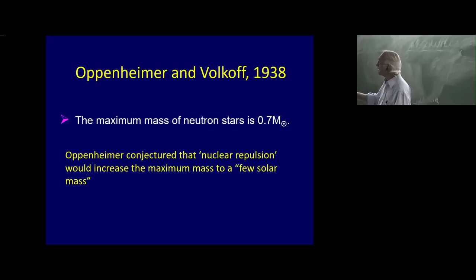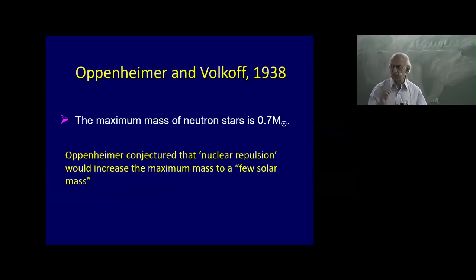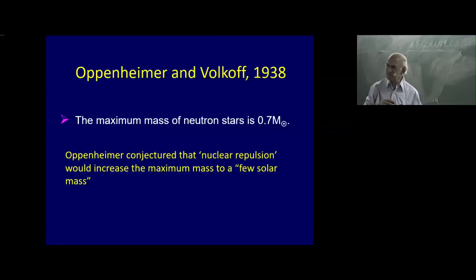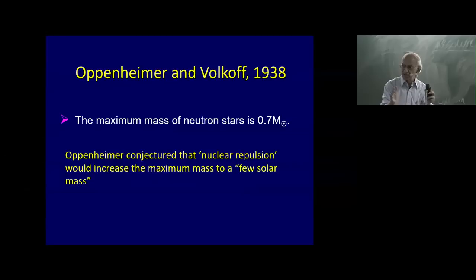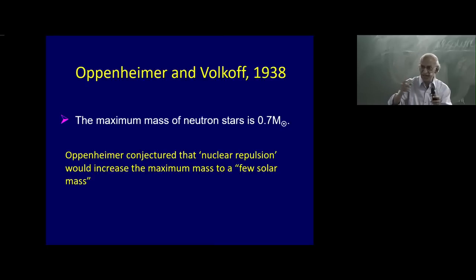The reason he said that: as you go to more and more massive neutron stars, the central density gets larger and larger. Therefore the neutron–neutron attractive force will become a repulsive force. Then there are two agents helping against gravity — the degeneracy pressure of neutrons, and also the nuclear repulsion. You will be able to support a larger mass if you include that repulsion. But they didn't know how to include it in 1938.